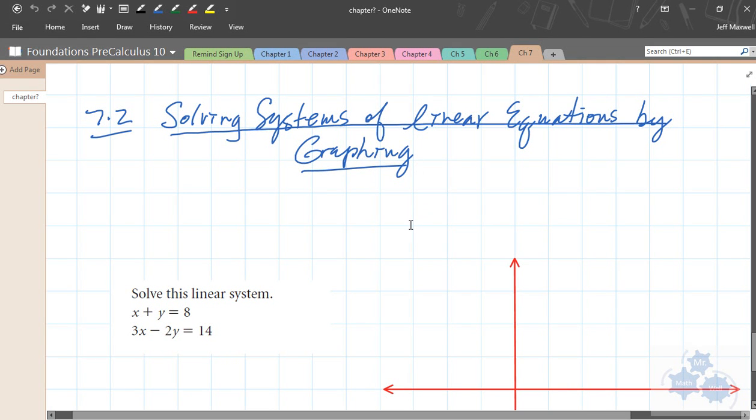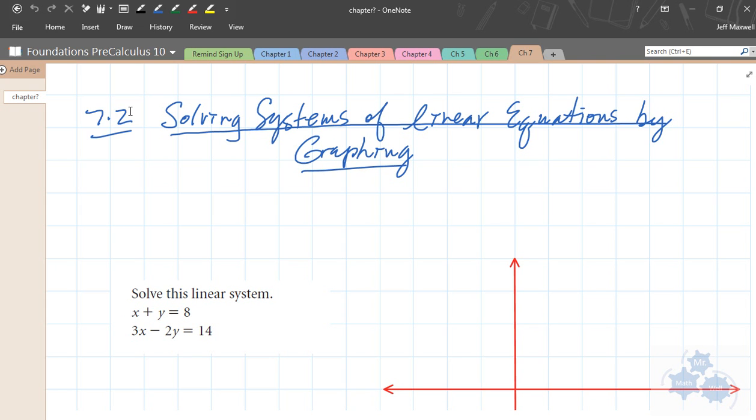Today's lesson is 7.2 in your textbook, page 403, Foundations of Pre-Calculus Mathematics 10 by Pearson. We talked about in 7.1 what are systems of linear equations, and those are two lines or two linear equations that would represent parts of a problem. A system is two or more equations representing a word problem or a situation of some sort.